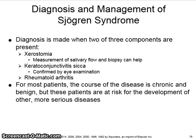Diagnosis of Sjogren's is made when two of three components are present: xerostomia, measurement of salivary flow rate, and biopsy. Keratoconjunctivitis sicca is confirmed by eye examination, and rheumatoid arthritis may also be a component.